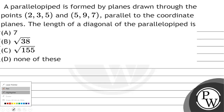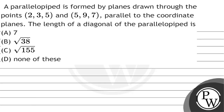Hello, let us read the question. A parallelepiped is formed by planes drawn through the points (2,3,5) and (5,9,7) parallel to the coordinate planes. The length of the diagonal of the parallelepiped is: option A) 7, option B) √38, option C) √155, option D) none of these.